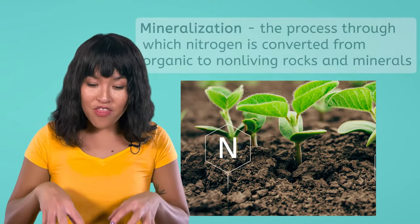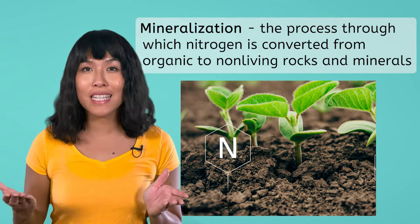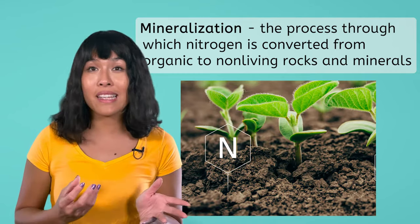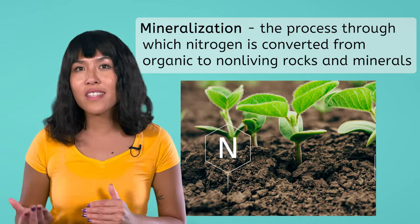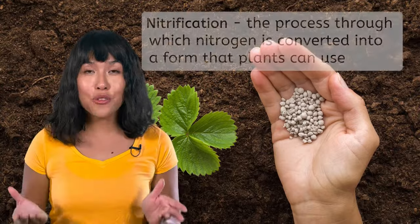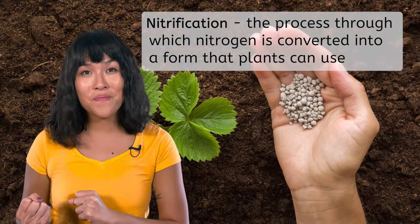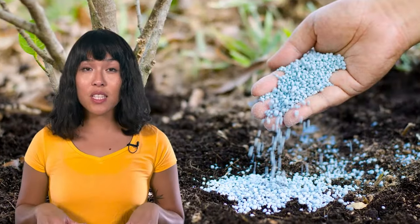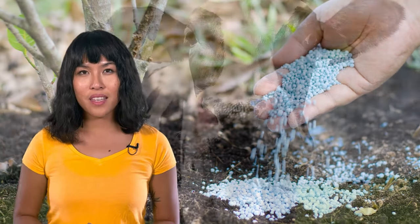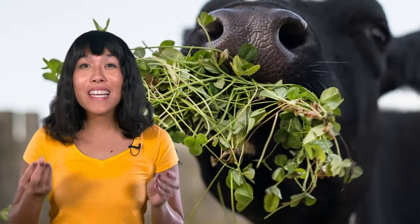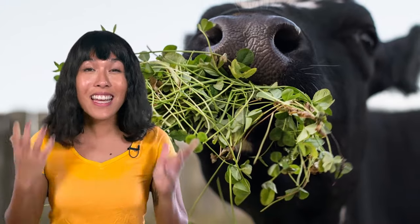Once the nitrogen is in the soil, it undergoes mineralization. During this process, nitrogen is converted from organic material like decomposing plants and animals into non-living rocks and minerals. Nitrogen in the soil can also undergo the process of nitrification, which converts the nitrogen into a form that plants can take in and use. In fact, nitrogen in this stage is a main ingredient in plant fertilizer. Animals get the nitrogen they need by eating the plants — just like in the carbon cycle.